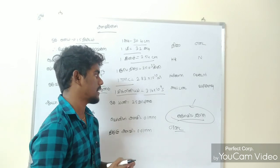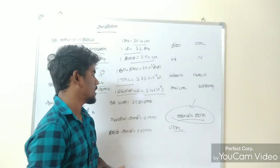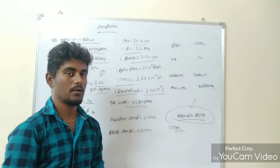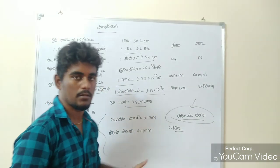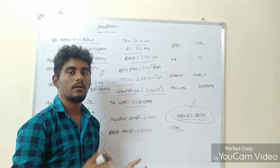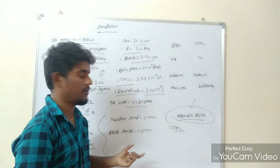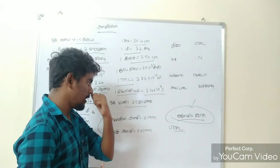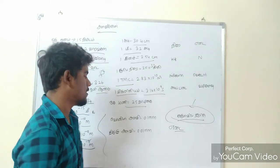3.16 into 10 power 9 seconds is a year. One unit is equal to 2.5. From Vernier Alavi, Thirug Alavi — if you look at the topic of Vernier Alavi and Thirug Alavi, you can learn Vernier Alavi and Thirug Alavi.